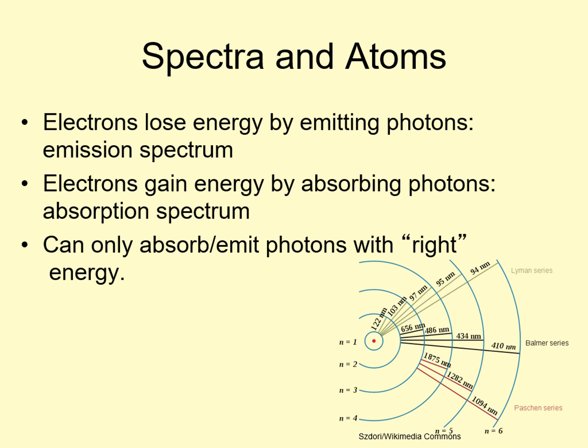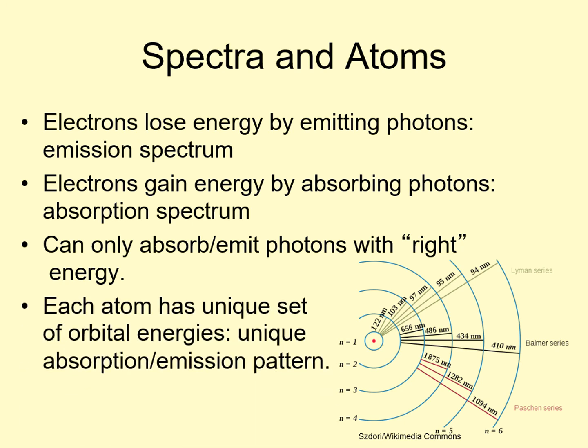Similarly, an electron dropping down to a lower level can only produce photons with energies that match that energy gap. This produces an emission spectrum — the pattern of bright lines matches the energies of the photons coming from the gaps. One important difference between the orbitals of an atom and a stairwell is that the orbitals aren't all regularly spaced. Imagine a stairwell where no two steps were the same height from each other — some steps would be huge, while others would be tiny. That's what orbitals are like. Each chemical element has a different pattern of step sizes. The pattern for hydrogen is shown here. Since each element has a different set of orbital energies, each one produces a different pattern of absorption or emission.